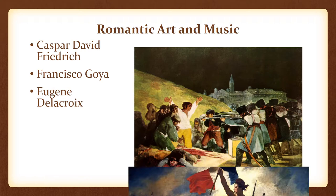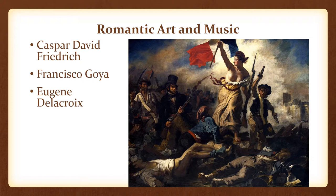Perhaps the best-known Romantic artist is Eugène Delacroix, who was interested in the dramatic use of color. His most famous work is Liberty Leading the People, which we'll discuss in more detail later. This was painted in 1830 and portrays the 1830 revolution in France.